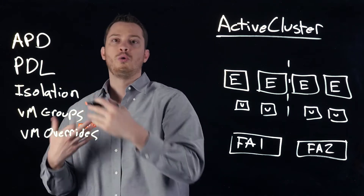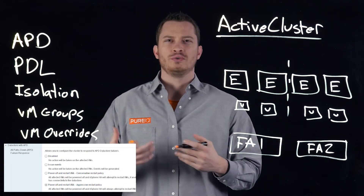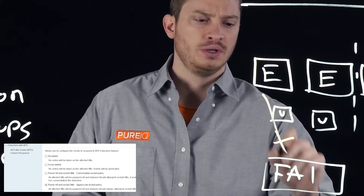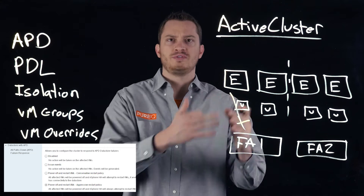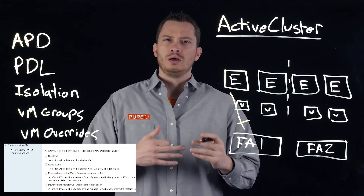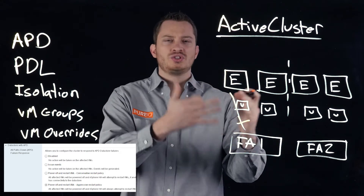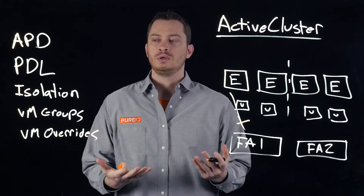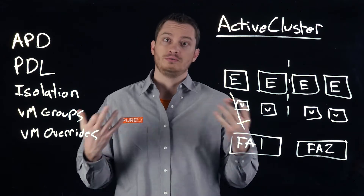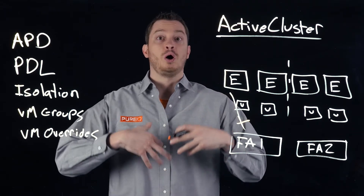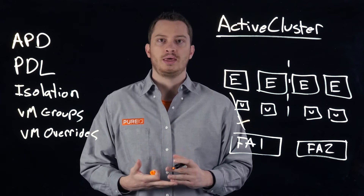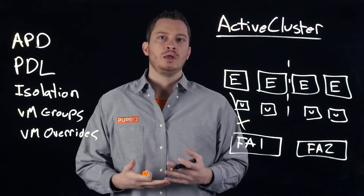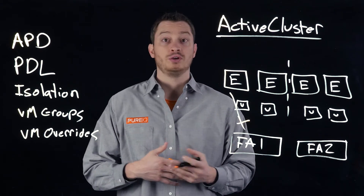There's also another one called All Paths Down. All Paths Down usually refers to some kind of failure in the storage environment. It could be that I've lost access to my array and no longer have some paths, but the array hasn't failed — the host just can't talk to that array anymore. Once it loses all those paths — like the switch is gone — after a certain period of time, 140 seconds, that volume will be seen as All Paths Down by that host, meaning it can no longer access it and doesn't really know why the paths are just down. vSphere HA can be configured to respond to that as well.